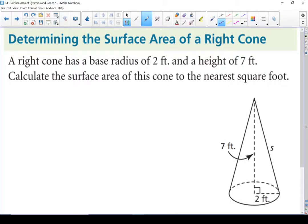Let's move on to a question. Determining the surface area of a right cone. So a right cone has a base radius of 2 feet and a height of 7 feet. Calculate the surface area of this cone to the nearest square foot. I always like starting by writing down my formula. Let's start defining our variables. I've got my base radius. So my radius equals 2 feet.